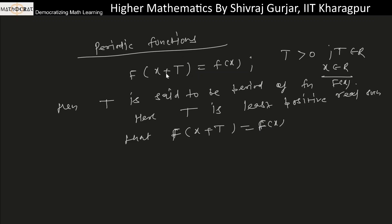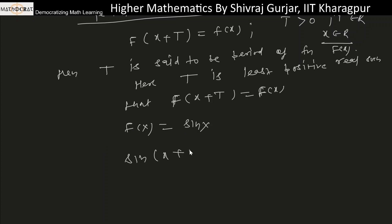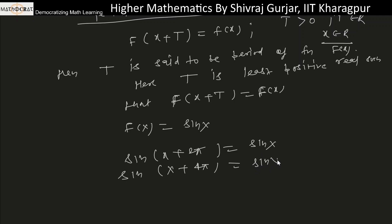The least T that satisfies this equation — for example, if f(x) = sin(x), then the least such value would be x plus 2π, so sin(x + 2π) equals sin(x). In fact, sin(x + 4π) also equals sin(x), but because we have to find the least T, we have to choose 2π.